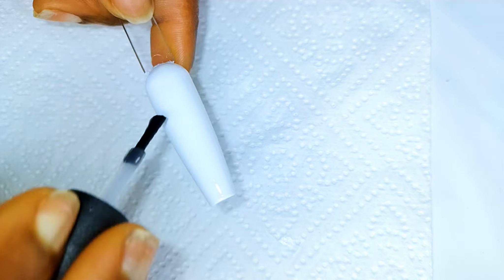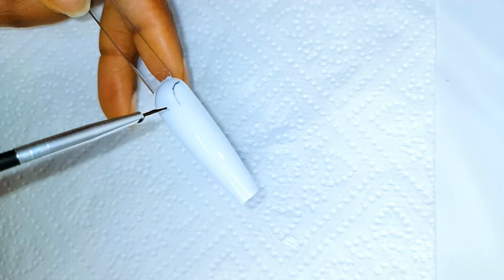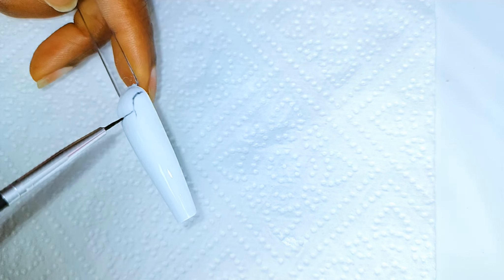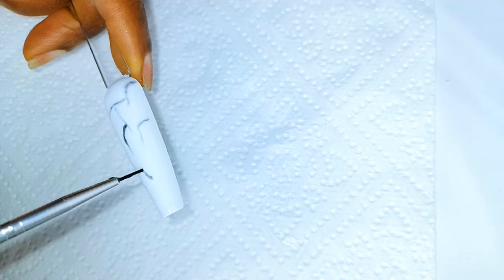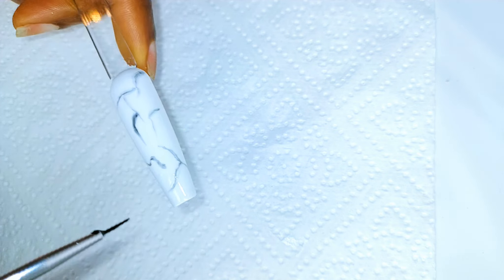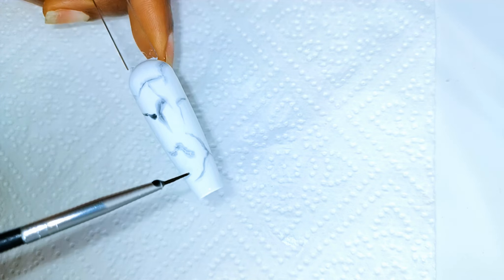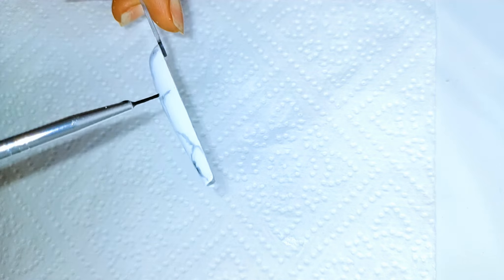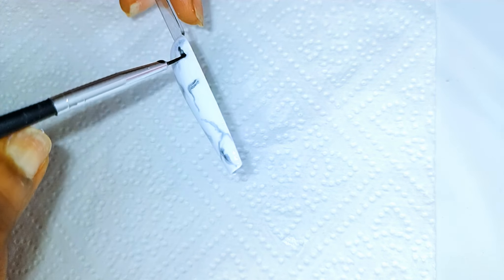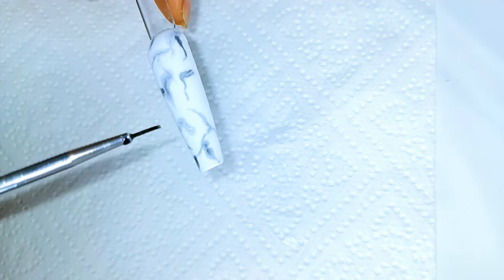Next I'll dip a very fine brush into black gel polish and then create designs on the white base. I'm not going in any order, I'm just trying to create the marble effect, so I'll just draw fine lines on the wet top coat.